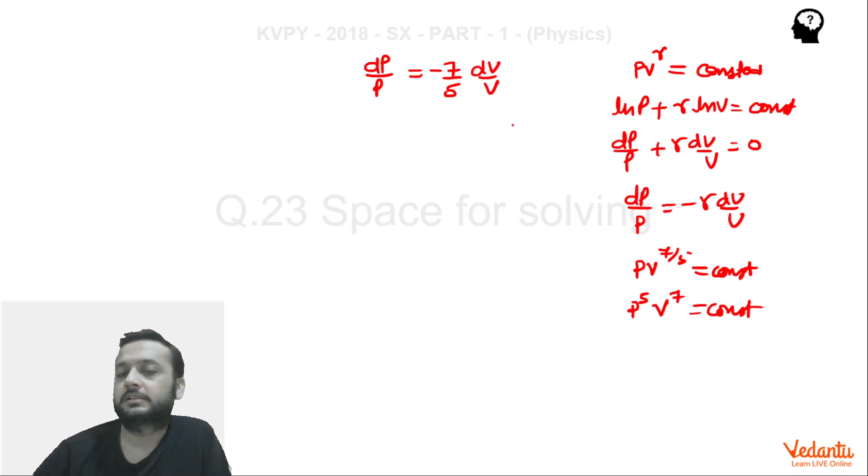We could have also, instead of comparing this, we could have also gone by the integral method. So we could integrate this, then also we would have gotten the same answer, okay.